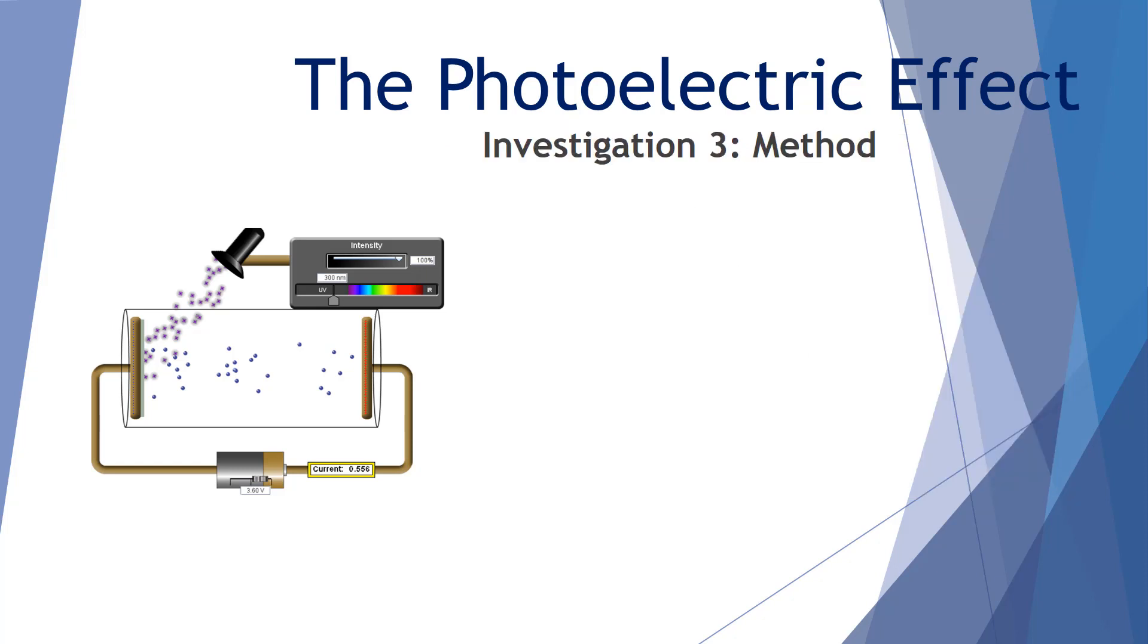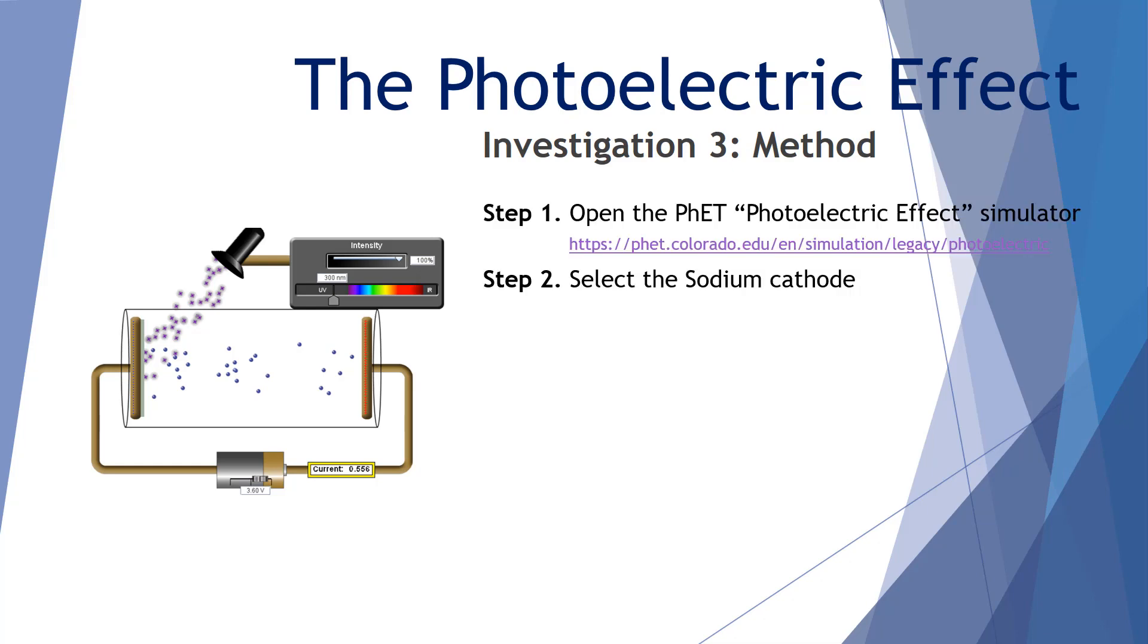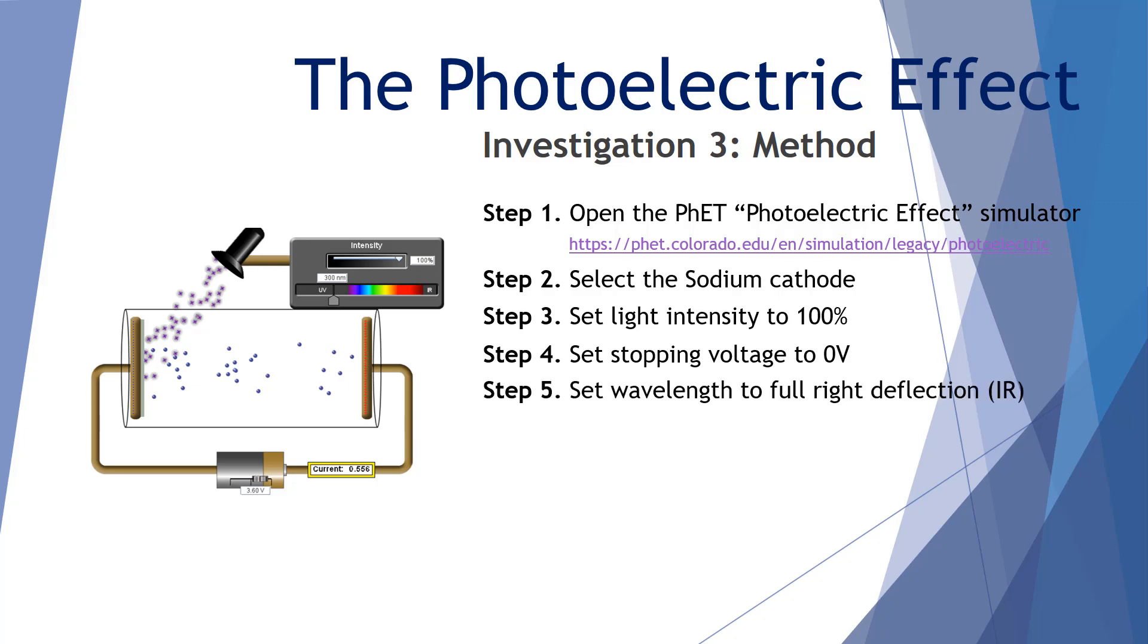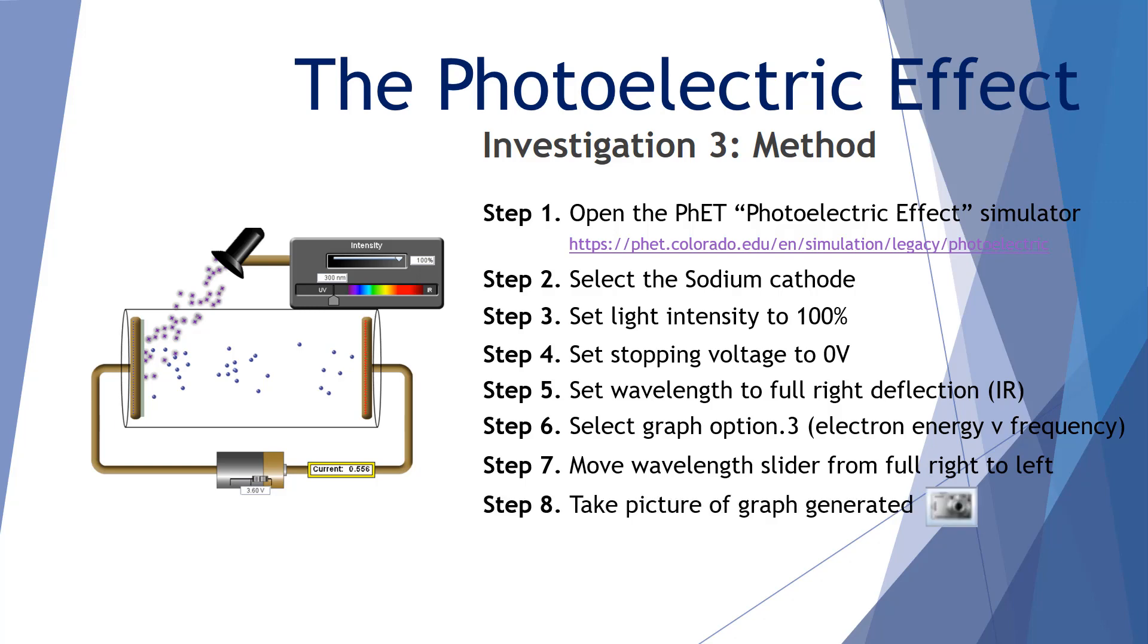Let's look at the investigation method. Number one, we're using the FET photoelectric effect simulator. Number two, select the sodium cathode. Number three, set light intensity to 100%. Step four, set stopping voltage to zero volts. Step five, set the wavelength to full right deflection in the infrared. Step six, select graph option number three, that is electron energy versus frequency graph. Step seven, move wavelength slider from full right to full left. Step eight, take a picture of the graph using the picture tool. And step nine, repeat steps one to eight for each of the cathode metals.